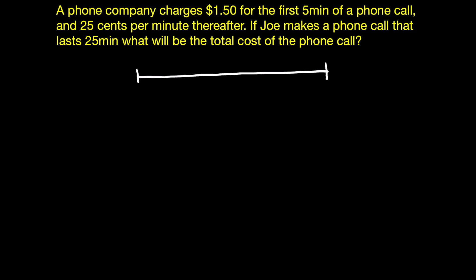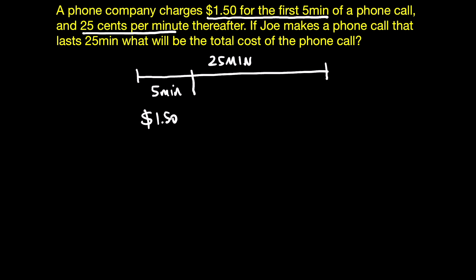I usually like to visualize problems before I start, so let's do that now. The phone call is 25 minutes. They're telling us that the first five minutes there's a fixed charge of $1.50, and then for the remainder — the other 20 minutes — we're going to be paying 25 cents per minute.